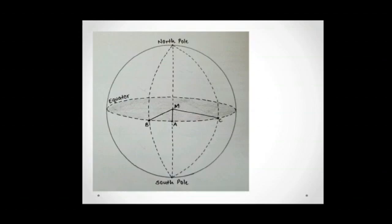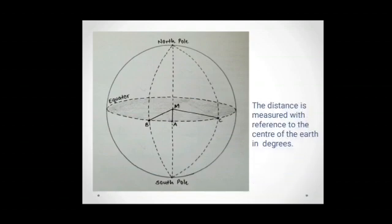Here we have another figure for better understanding. In this figure, we see an equator with point M. We also have points B, A, and C on the equator. Considering the points on the equator and them joining at the center of the Earth, we know that the distance is measured with reference to the center of the Earth in degrees. For example, point B lies at a distance of 30 degrees from the equator, point A lies at a distance of 50 degrees from the equator, and point C is at a distance of 70 degrees from the equator.